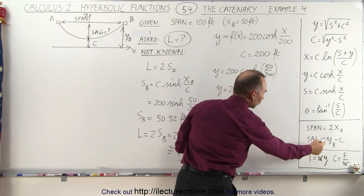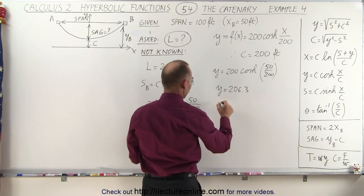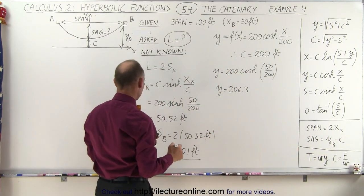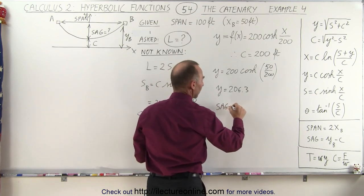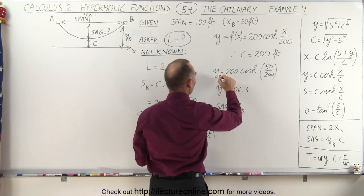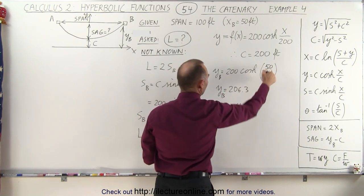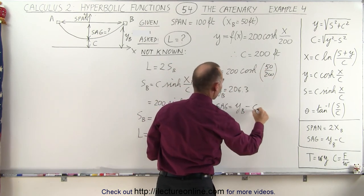So y equals 206.3. And now we can say that the sag is y minus c. So the sag, let's see. Oh, there's c right here. So we have the sag is equal to y sub b, which, of course, this is y sub b because we picked x sub b.